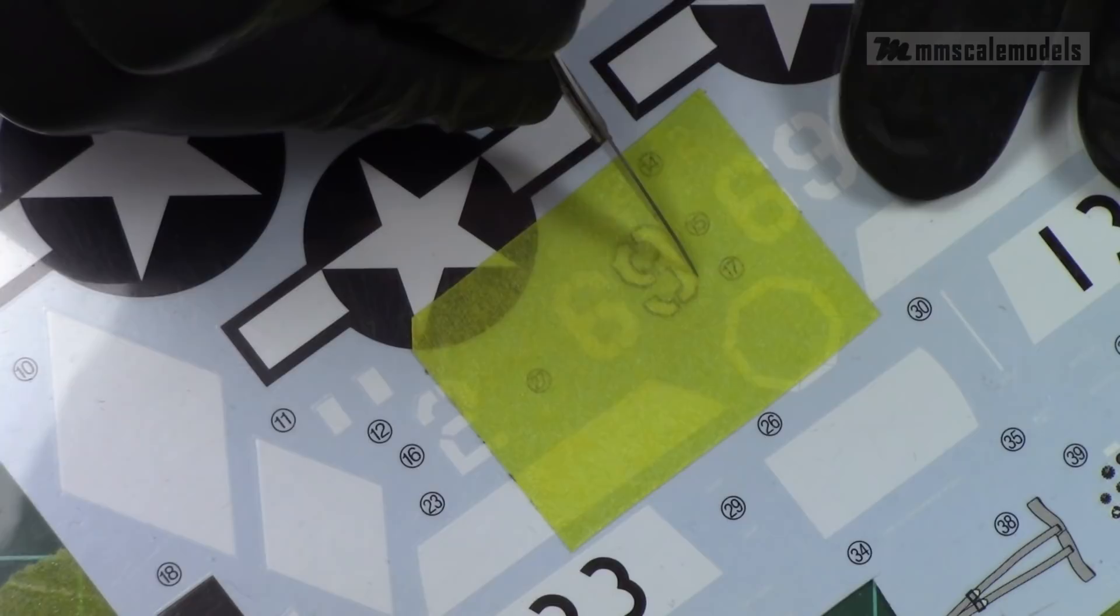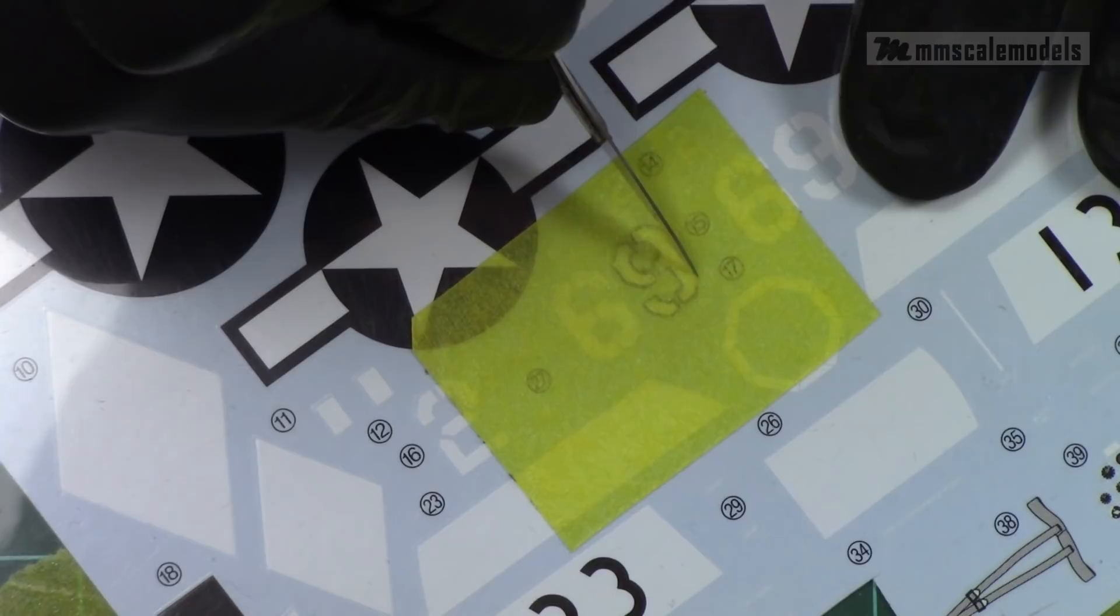Then when you place the tape the outlines are much more visible. To cut the tape you can use ruler or do it free hand but it may take some practicing.